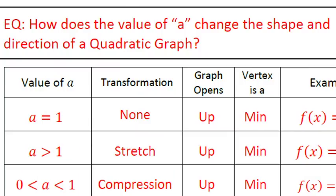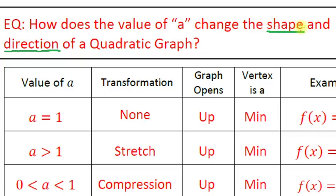The essential question we want to answer in this video is how does the value of a change the shape and direction of a quadratic graph. Pay special attention to those two words: shape and direction. The value of a does nothing to change the location of a graph — it does not determine where the vertex is going to be. What it does determine is how compressed or stretched a graph will be (that's the shape) and whether it opens up or down (that's the direction).